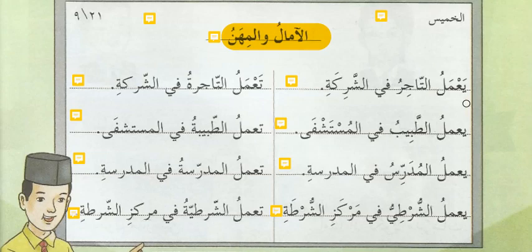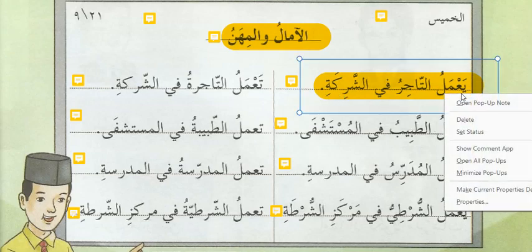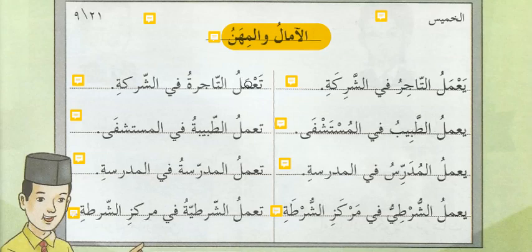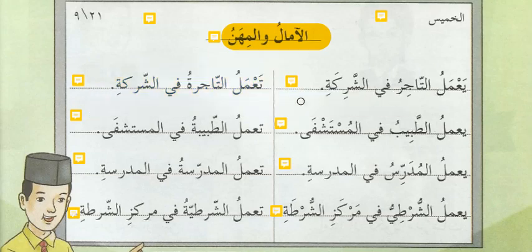Kita baca dahulu ayat yang pertama. Ya Melu tajiru fis syarikati. Kita tengok pula al-mu'annas: Ta' Melu tajiru fis syarikati. Kamu dapat lihat perbezaan antara muzakar dan mu'annas — kalau muzakar dia guna Ya: Ya Malu, dan mu'annas guna Ta': Ta' Malu.